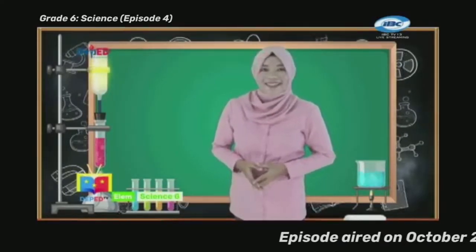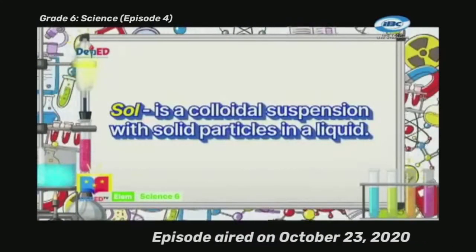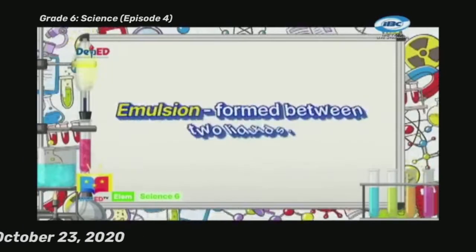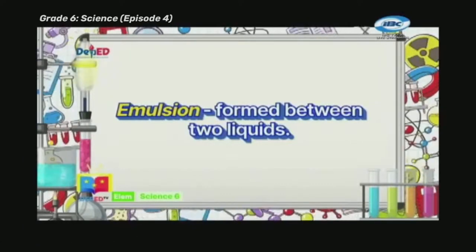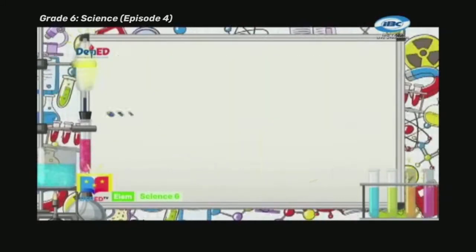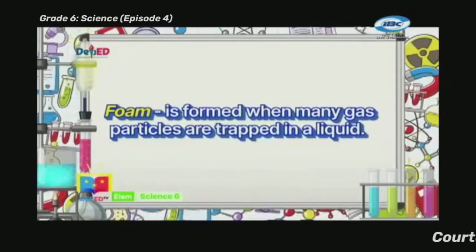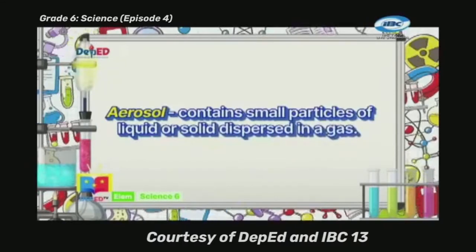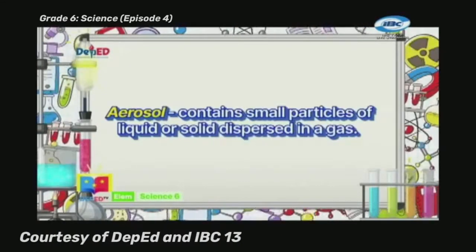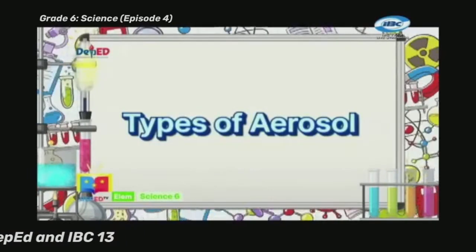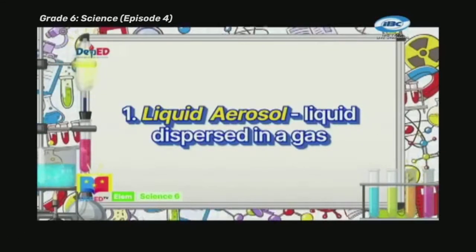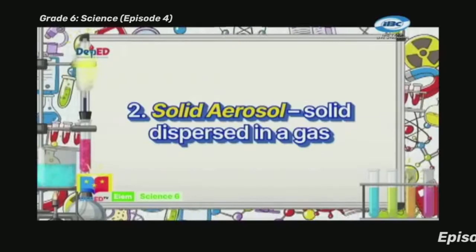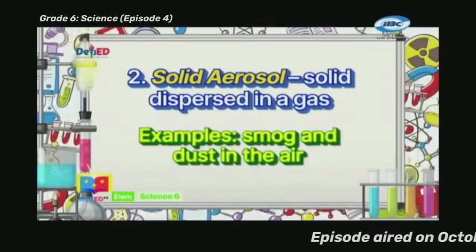A common method of classifying colloids is based on the phase of the dispersed substance and at what phase it is dispersed. The types of colloids are: Number 1 — Sol, a colloidal suspension with solid particles in a liquid; examples are gelatin and blood. Number 2 — Emulsion, formed between two liquids; examples are milk and mayonnaise. Number 3 — Foam, formed when many gas particles are trapped in a liquid; examples are beaten egg white and whipped cream. Number 4 — Aerosol, which contains small particles of liquid or solid dispersed in a gas. Types of aerosol: liquid aerosol — liquid dispersed in a gas, examples are fog and clouds; solid aerosol — solid dispersed in a gas, examples are smog and dust in the air.